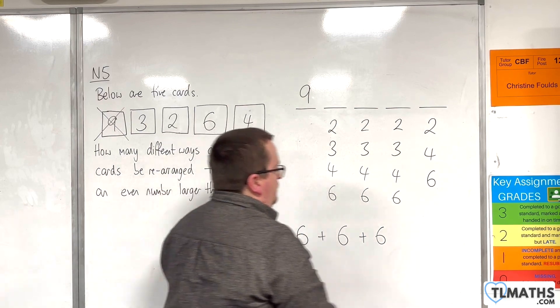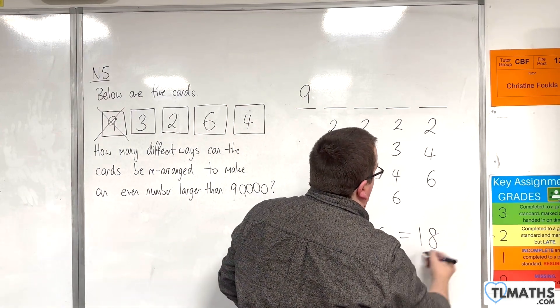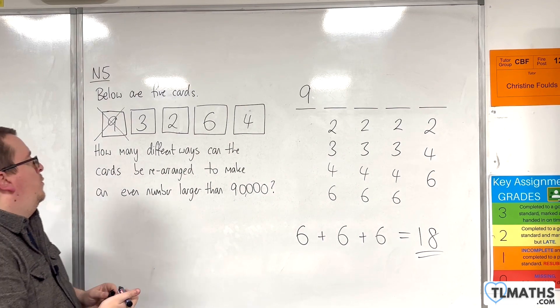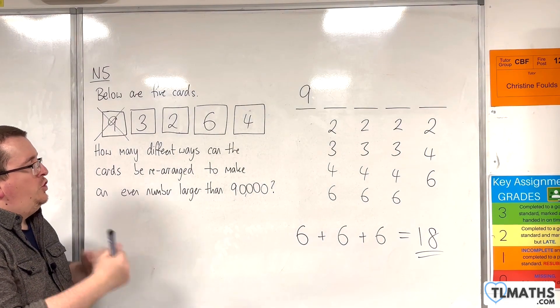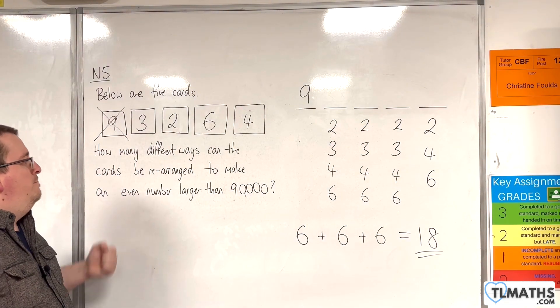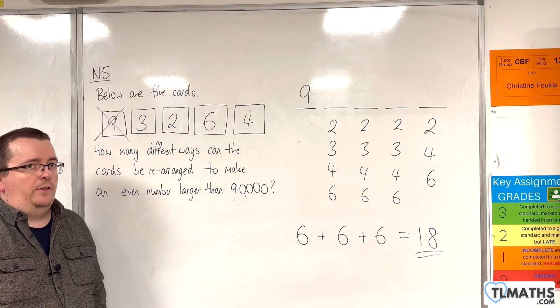And so in total, there are 18 possible ways of rearranging the cards to make an even number larger than 90,000.